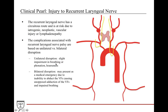When there is injury to the recurrent laryngeal nerve, it can be devastating. The recurrent laryngeal nerve is at risk along its long course into the thoracic cavity from iatrogenic, neoplastic, vascular injury, or lymphadenopathy. If the injury is unilateral, you'll get slight impairment in breathing, phonation, or hoarseness. If it's bilateral, this is a medical emergency — the patient can lose the ability to abduct the vocal folds, causing unopposed adduction and impaired breathing.